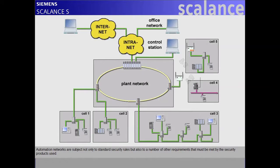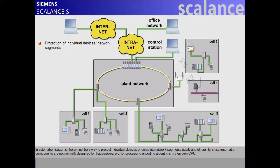A firewall focuses all security measures on one point and therefore makes internal networks less vulnerable. Automation networks are subject not only to standard security rules, but also to a number of other requirements that must be met by the security products used. In automation systems, there must be a way to protect individual devices or complete network segments easily and efficiently, since automation components are not normally designed for that purpose, for example for processing encoding algorithms in their own CPU. Different security levels may be required in an automation network, depending on the size, number of connections, and protection concept.